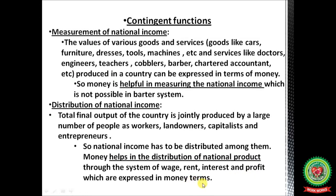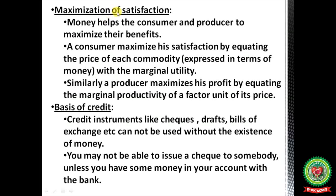Maximization of satisfaction: money helps consumers and producers to maximize their benefits. A consumer maximizes satisfaction by looking at prices — if prices are cheap and the commodity is of good quality, consumer satisfaction is maximized. Similarly, a producer maximizes profit by equating the marginal productivity of a factor per unit increase in production with the profit from per unit of production.